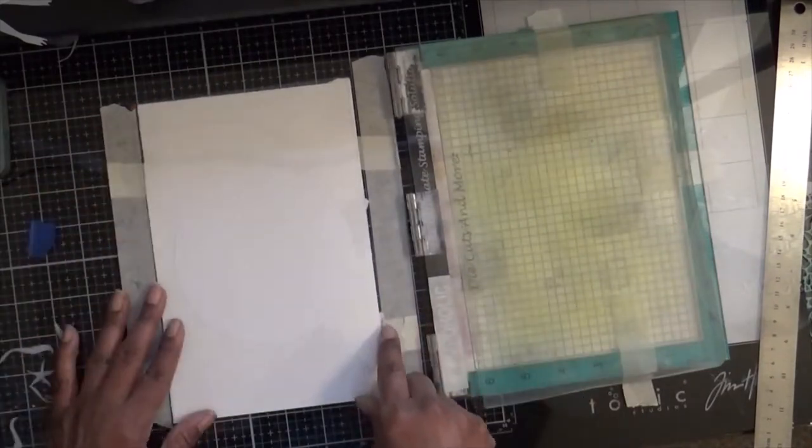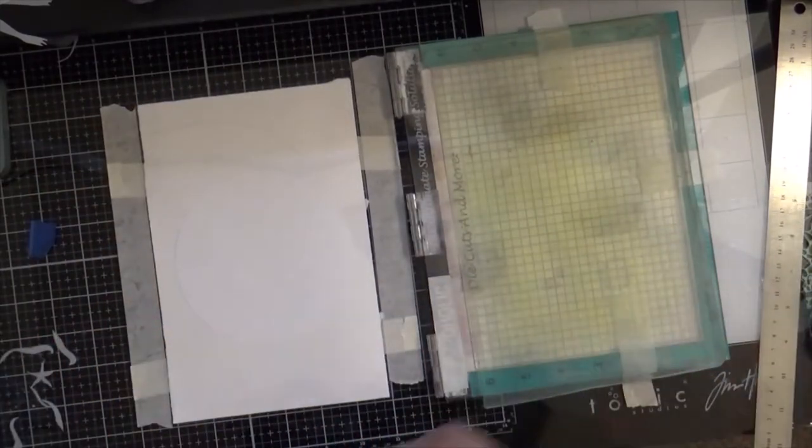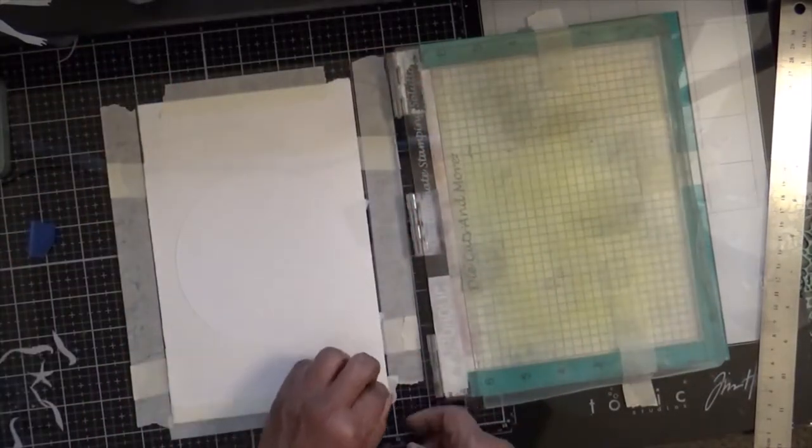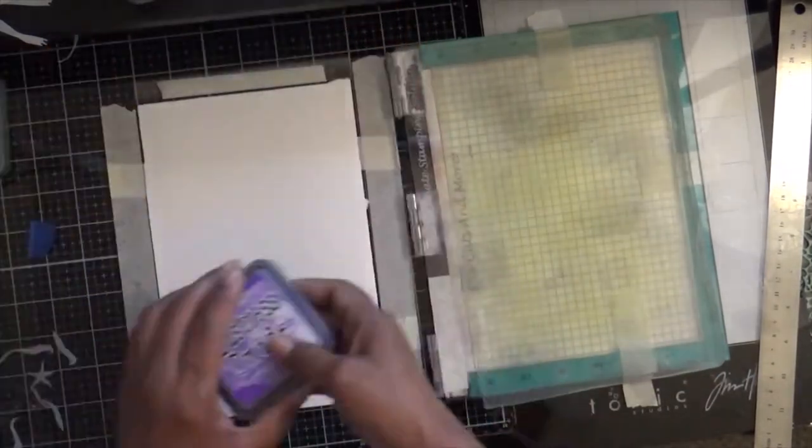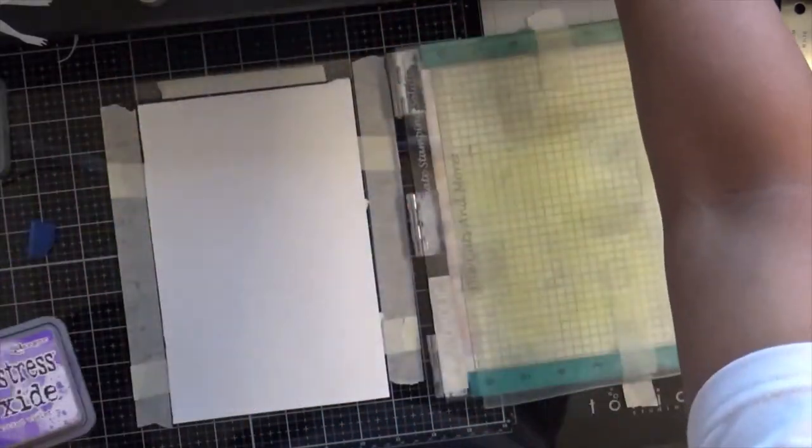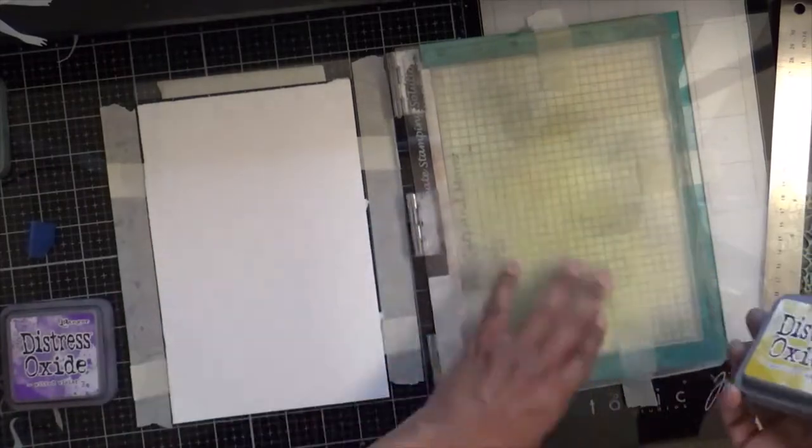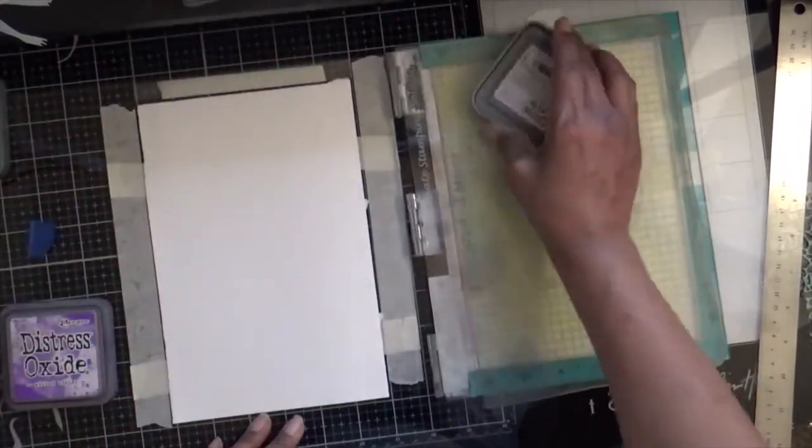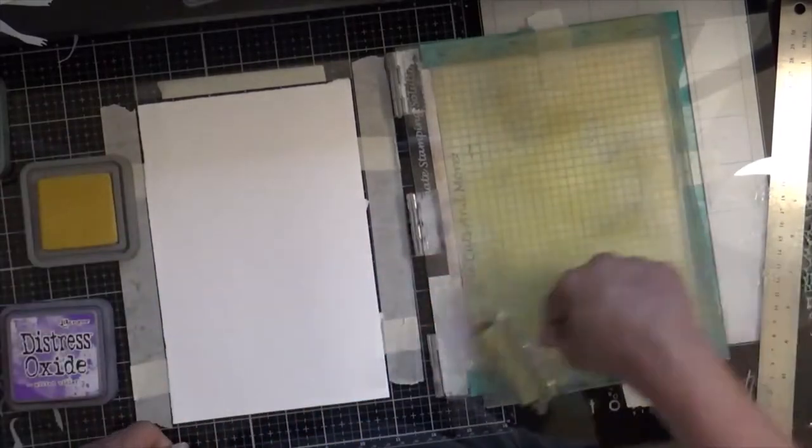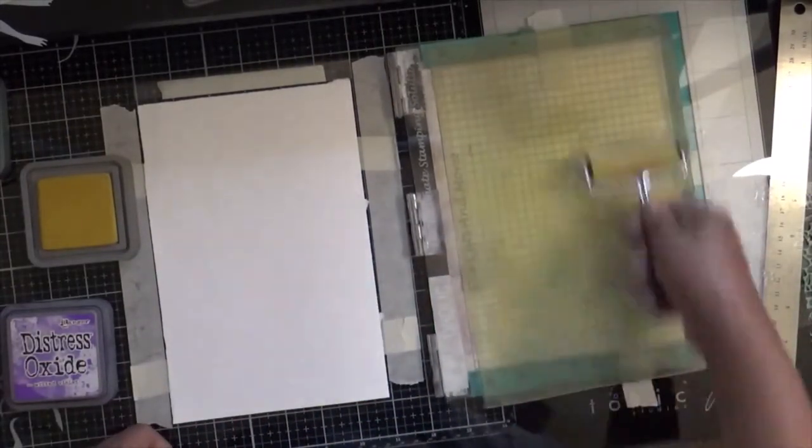I'm going to take my stencil. This is my new fish stencil. The one that's in my Etsy shop is actually smaller than the one I'm using on this page. But I'm just prepping the circle part of it and getting my inks ready. And I'll leave the name of the inks in my description as well as the link to Jennifer McGuire's video.